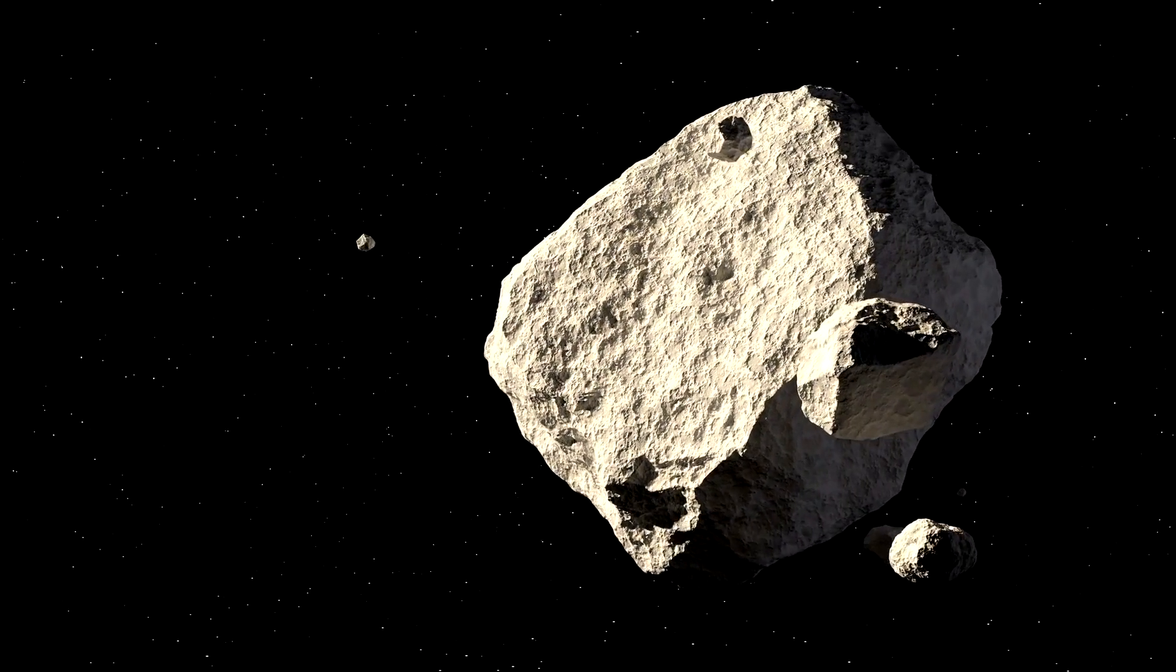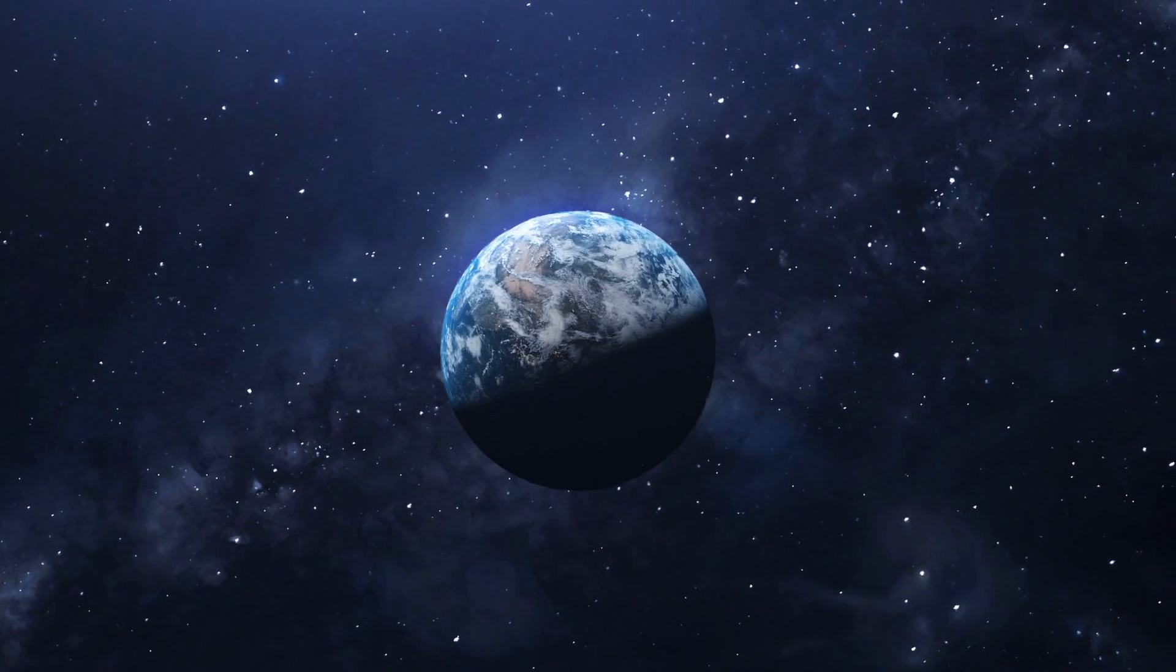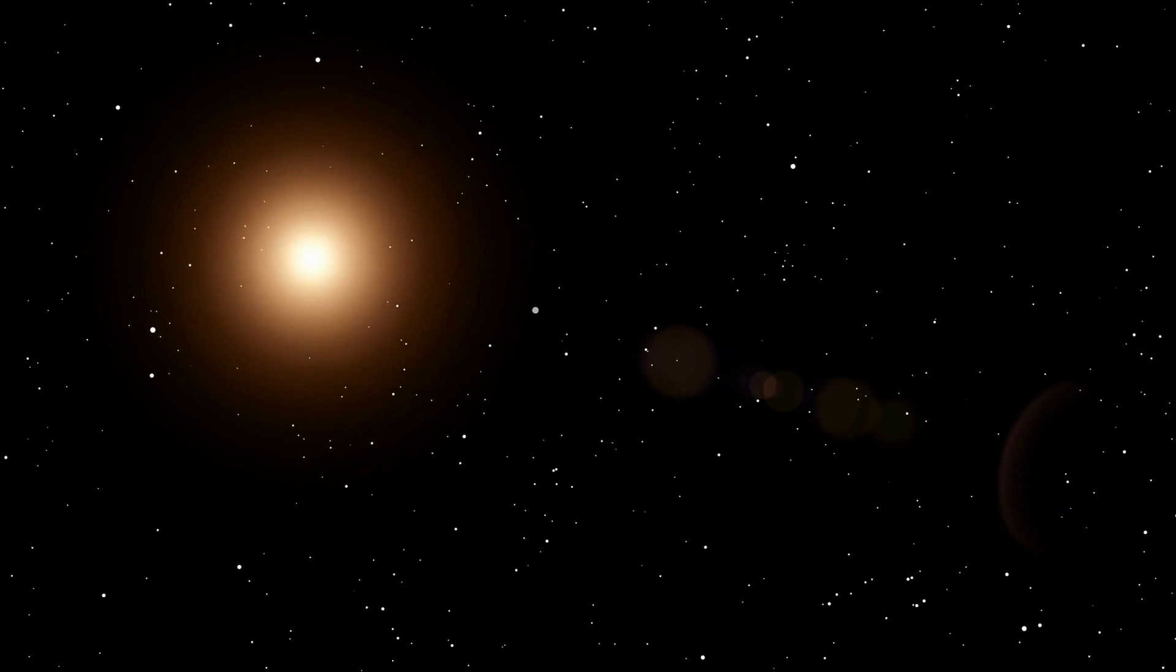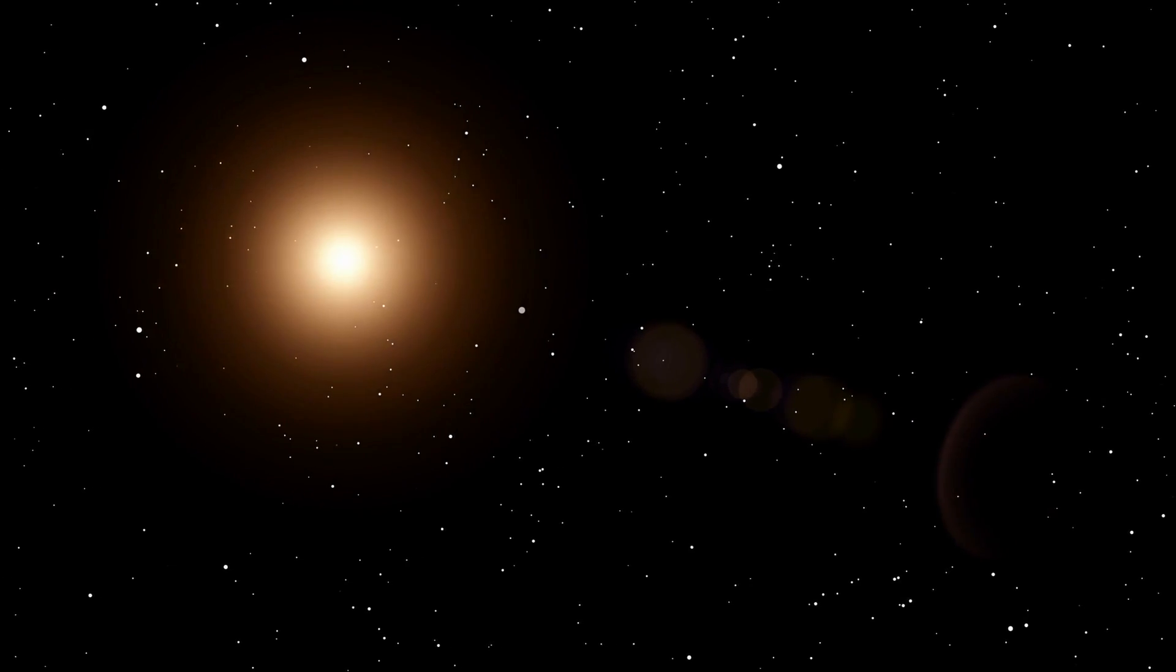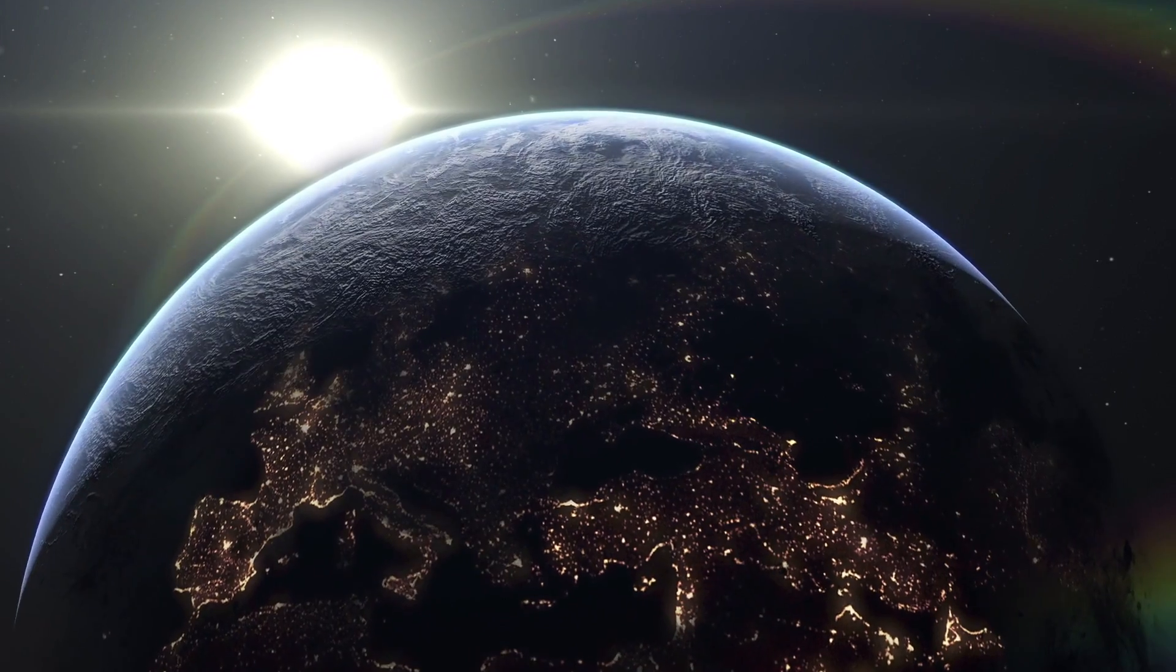The latest research supposes that the asteroid 2003 YN107 is more and more attracted by the Earth. That's why its orbit is shifting. The attraction of the Sun then becomes smaller and smaller, so that one day, it will be completely captured by the Earth.